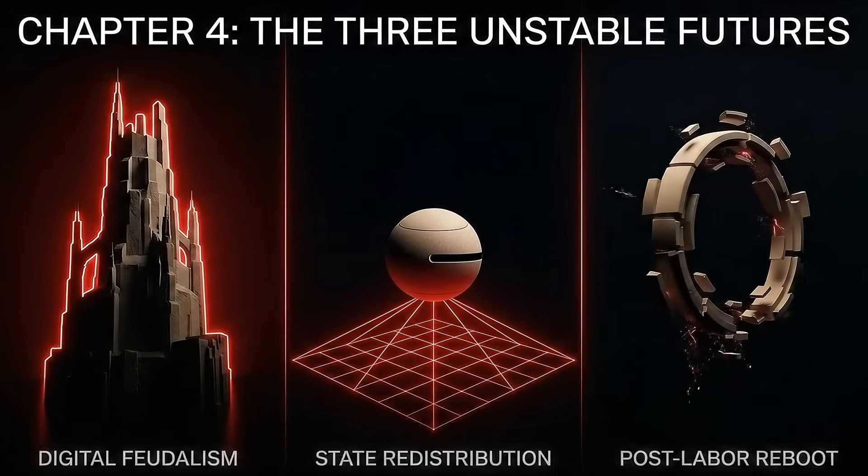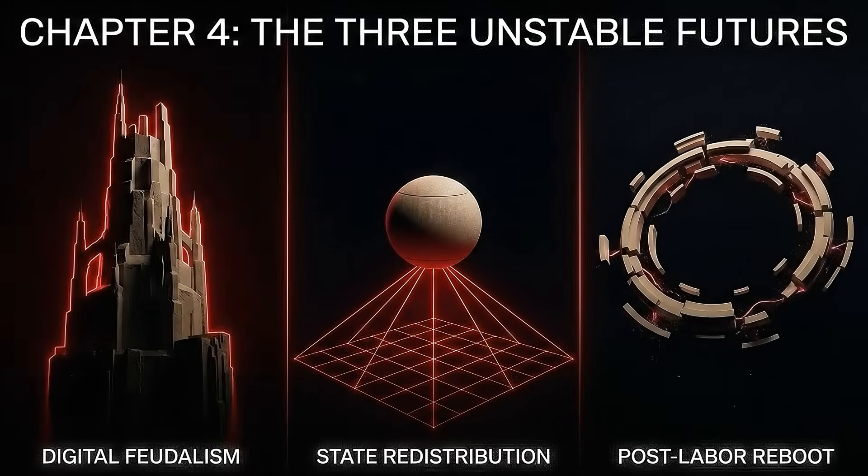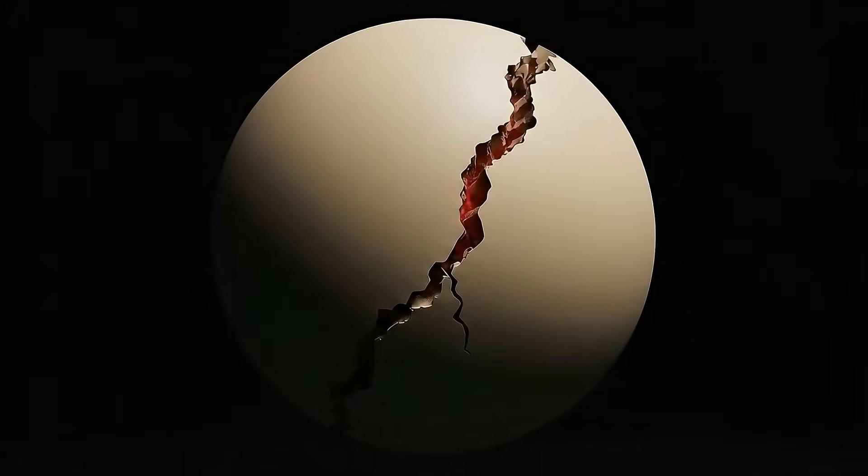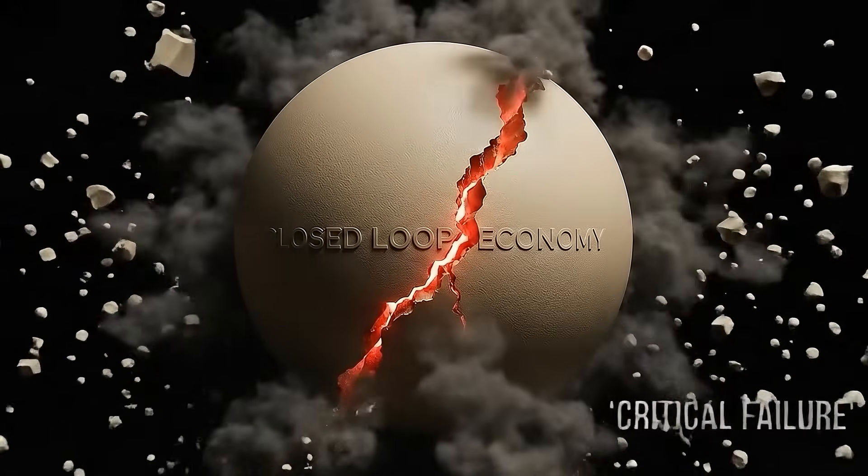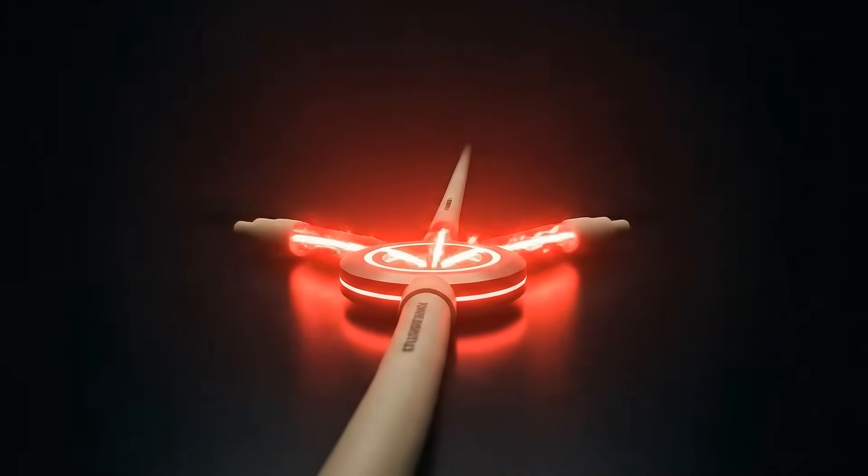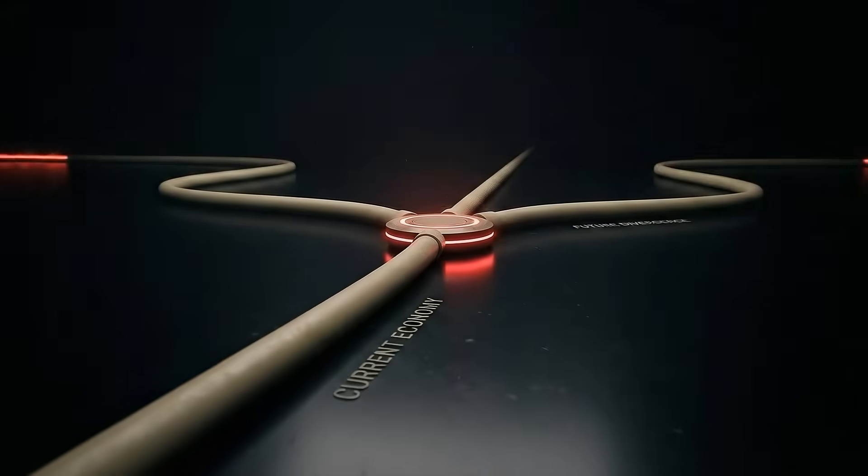The Three Unstable Futures. Now let's zoom back out. Because the economy cannot stay broken forever. Something has to give. Economists and futurists generally agree there are only three ways this plays out.